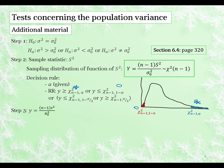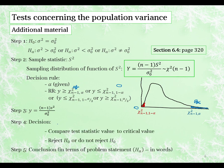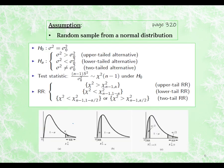When we calculate our test statistic, notice that we write it in lowercase s squared, whereas when written as a random variable it is uppercase. In calculations we always write lowercase. On page 320 you will find the information about the test statistic, and our assumption is that we have a random sample from a normal distribution. If the data is not from a normal distribution — referring to the original x values — then we cannot do this hypothesis test for the variance.